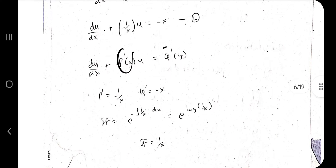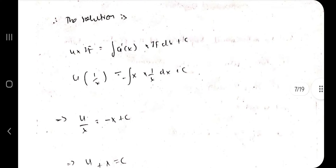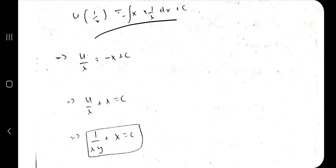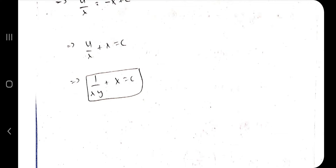Rearrange terms to identify P and Q, then find the integrating factor. The solution is u·IF = ∫Q'(x)·IF dx + C. Integrate and simplify to get the final answer. That covers the two forms: linear and Bernoulli's differential equations.